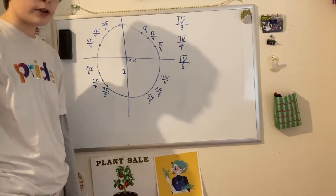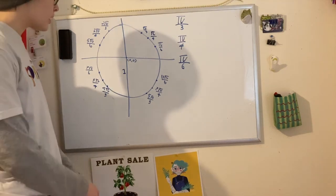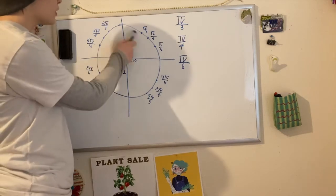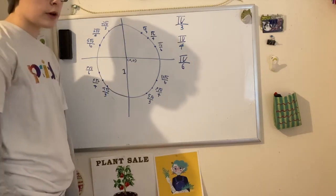Today we're going to talk about how to memorize the unit circle. There are 16 important points on this, but I'm assuming you've already memorized these four intersections with the axes, so we're going to talk about the other 12.